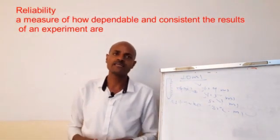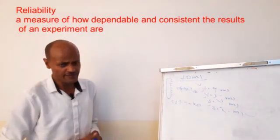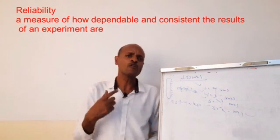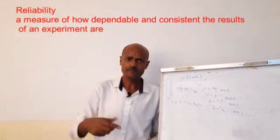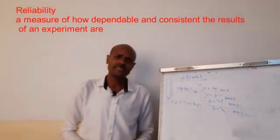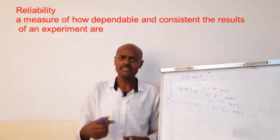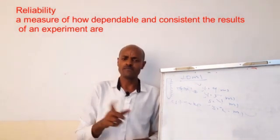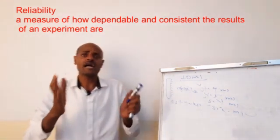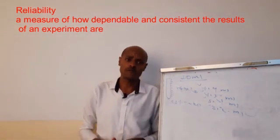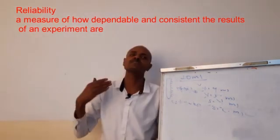The other term is reliability. Reliability refers to a measure of how dependable and constant the results are. If you are using an experiment, you can use constant, consistent, and dependable results — that means it is reliable. The measure of how dependable and consistent the results of an experiment are.